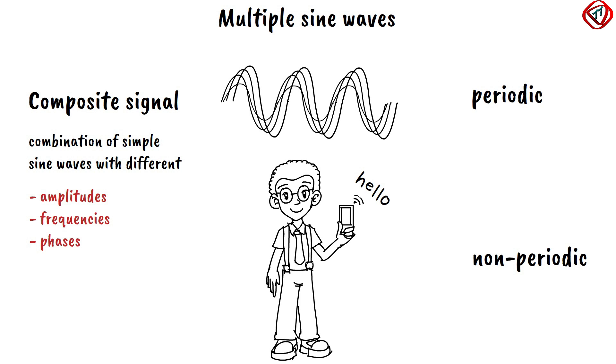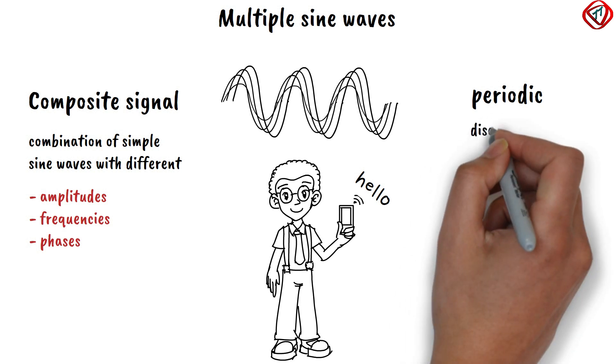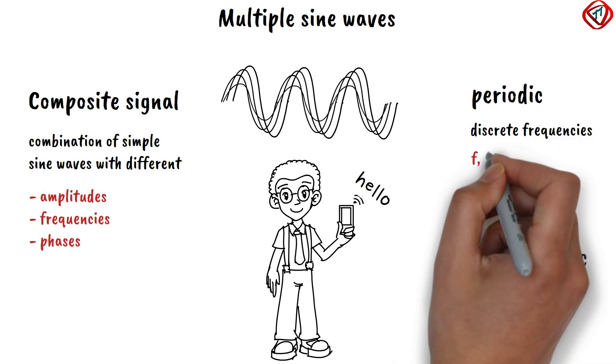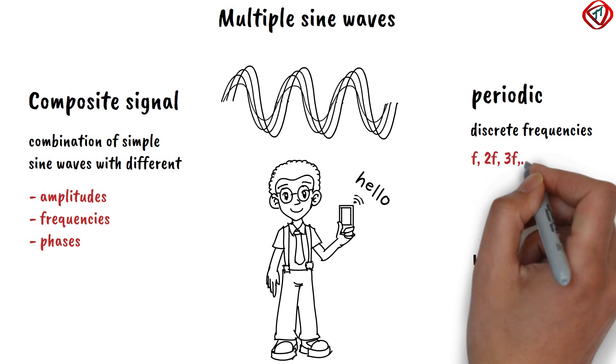A periodic composite signal has sine waves with discrete frequencies that have integer values, e.g. f, 2f, 3f, etc.